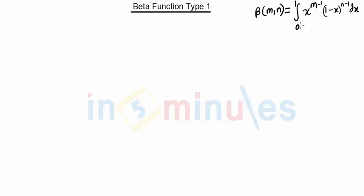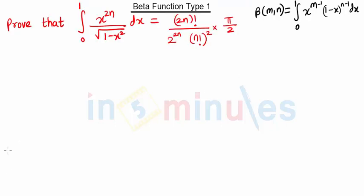In this type, the limits of integration will also be 0 to 1. Looking at this question, we have limits from 0 to 1, so this is of Type 1. We have to reduce the given equation into this form so that we can apply the formula of beta(m, n). In this question we have to prove this equation is equal to the given term.